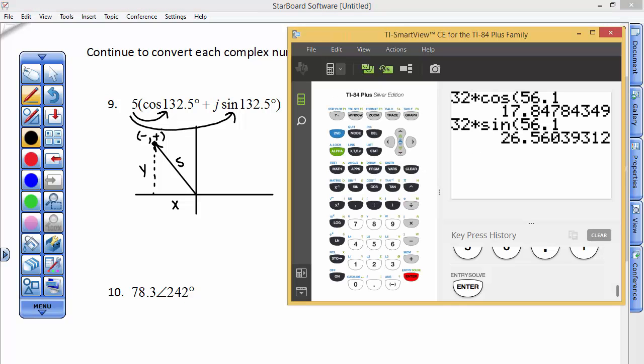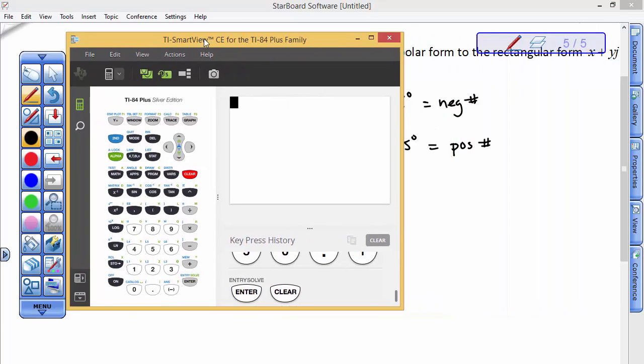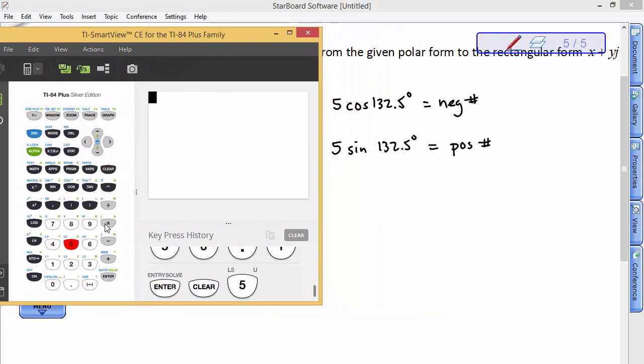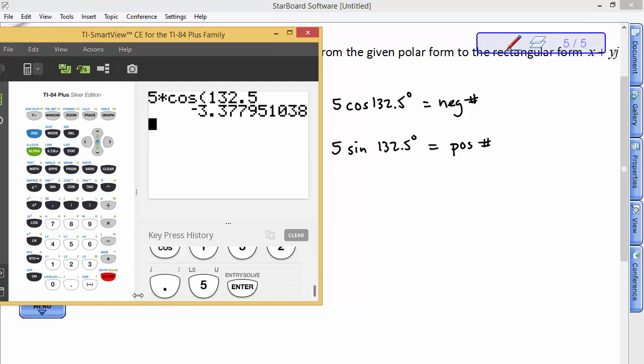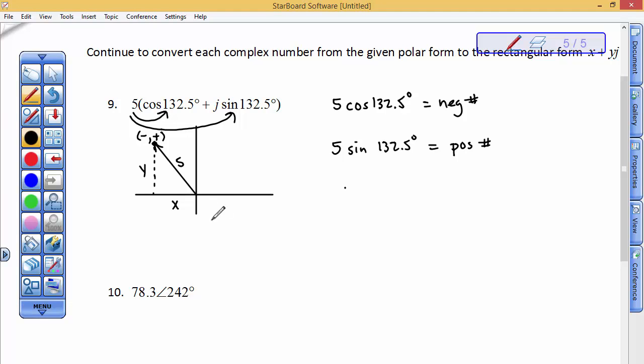Let's see what they are. So, I'll try to move my calculator here in a minute. So, 5 times the cosine of 132.5 is a negative 3.37. And then, 5 times the sine of 132.5 is 3.68. So, remember how I said they're about the same size? So, what I have here is a negative 3.38 and then a positive 3.69j.